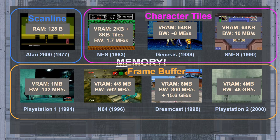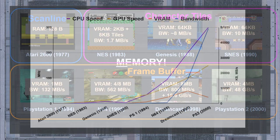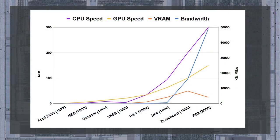But that doesn't explain why the bandwidth rose so rapidly. Here are the previous numbers in line chart form, which makes it much easier to see the overall trends. The CPU speed does rise quite a bit over this period, allowing for more complex game logic and environmental interactions, but the VRAM bandwidth makes a far more drastic increase. So what drove this trend? Sure you can say it was the need for better graphics, but that doesn't explain why higher bandwidth leads to better graphics.